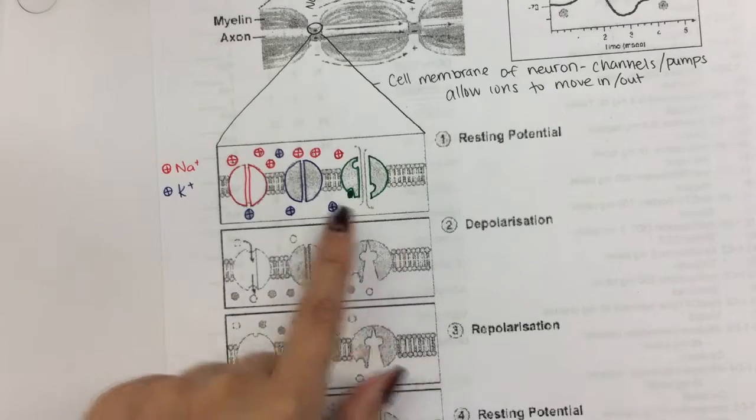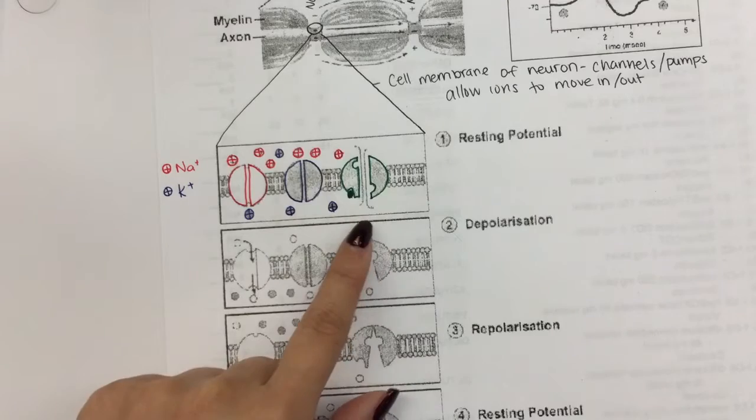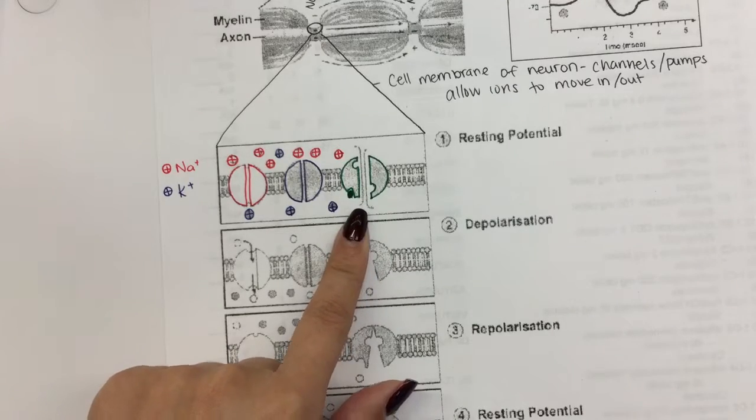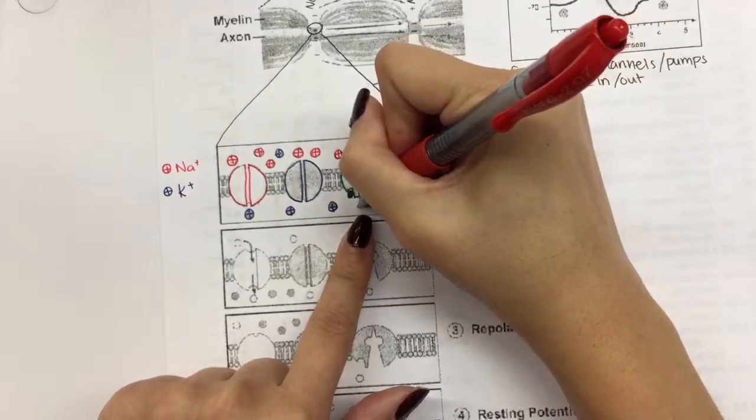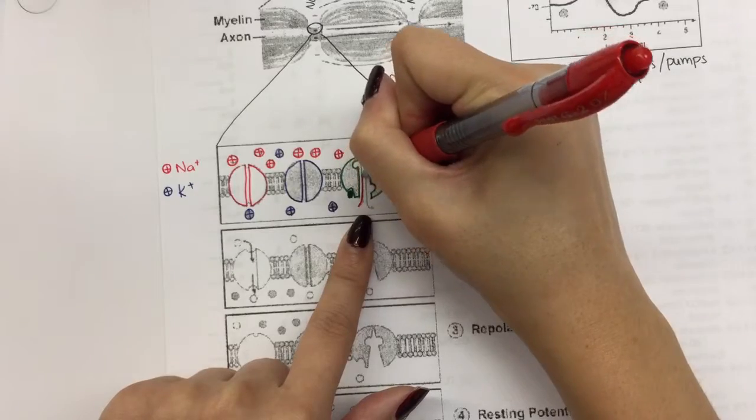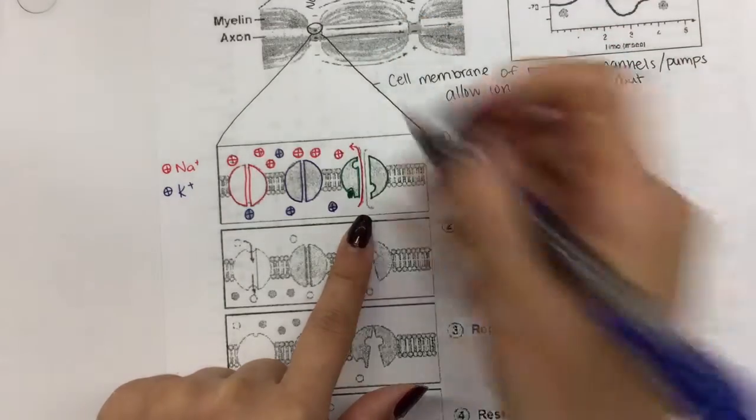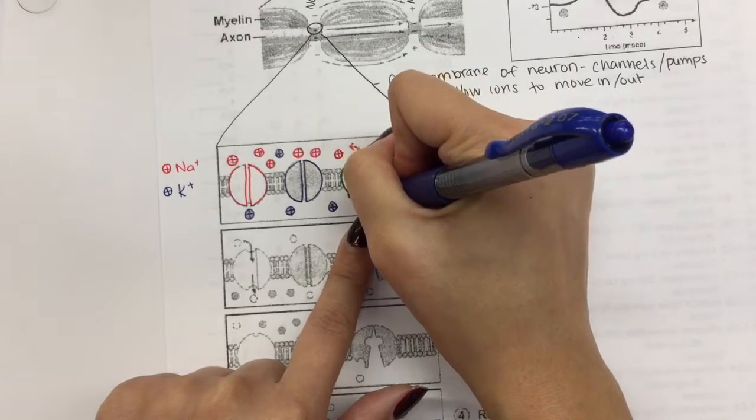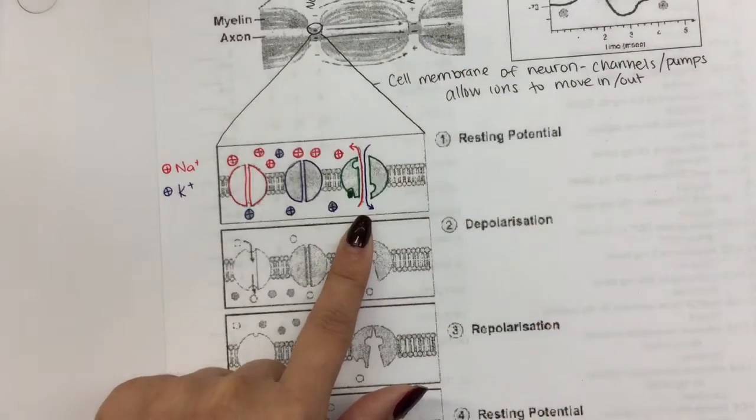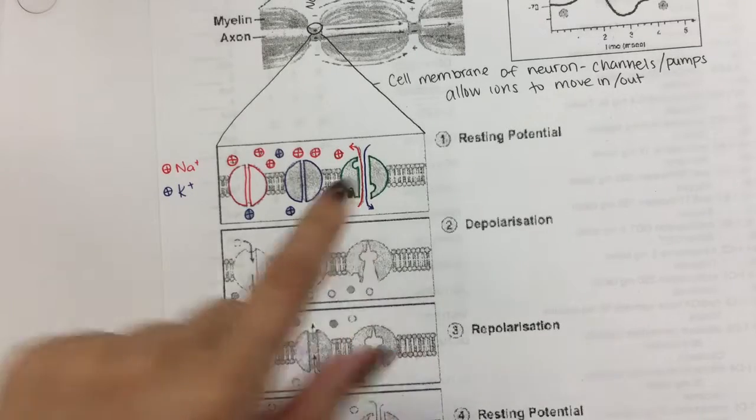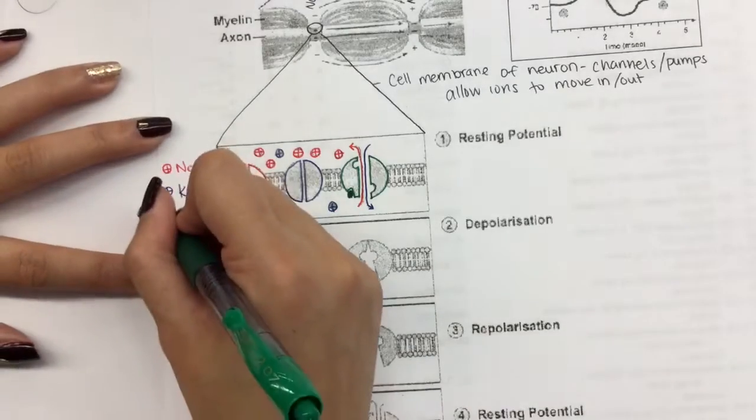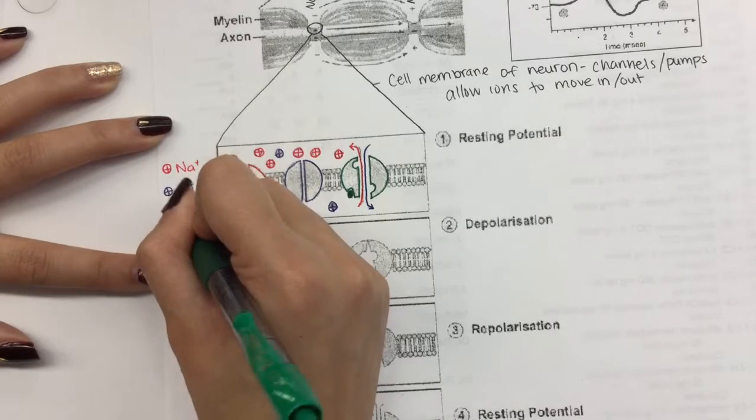Since ATP is here, sodium-potassium pump is going to move sodium out and potassium in. So I'm going to use red to show the sodium getting pushed out of the cell. And I'm going to use blue to show that potassium is getting pulled into the cell. I forgot to add green is sodium-potassium pump.